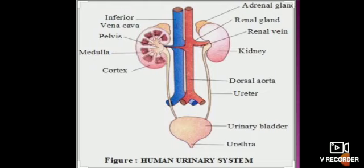A pair of kidneys is present, and on the anterior side of each kidney the adrenal glands are located. Blood enters the kidney through the renal artery, and deoxygenated blood exits through the renal vein, which leads to the inferior vena cava toward the heart. The cortex is the outer portion, the medulla is the inner portion, and the pelvis receives the urine.